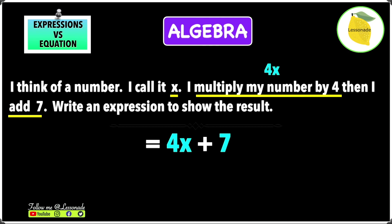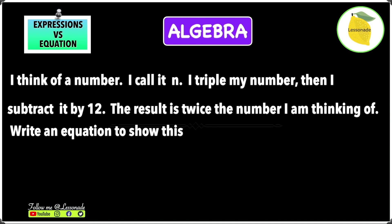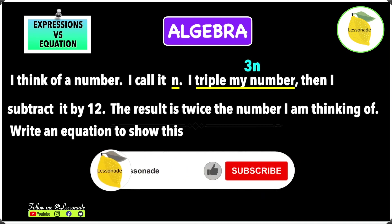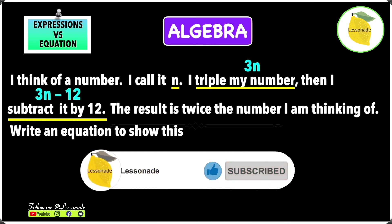Now let's look at forming an equation. Example: 'I think of a number. I call it n. I triple my number, then I subtract 12. The result is twice the number I'm thinking of. Write an equation to show this.' Tripling n gives 3n, then subtracting 12 gives 3n minus 12.